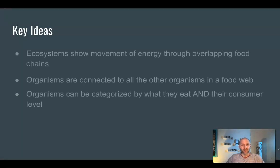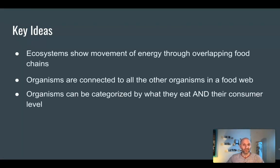So here are your key ideas: ecosystems show the movement of energy through overlapping food chains, ecosystems are all connected to each other in a food web, and organisms can be categorized based on what they eat as well as their consumer level.